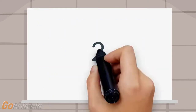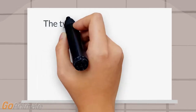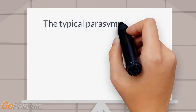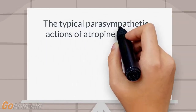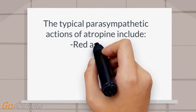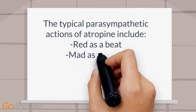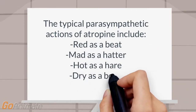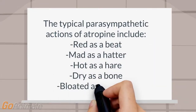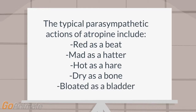Number 2: The typical parasympathetic actions of atropine include red as a beet, mad as a hatter, hot as a hare, dry as a bone, and bloated as a bladder.